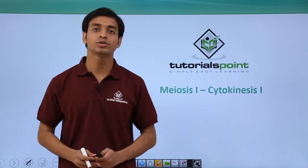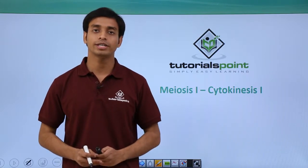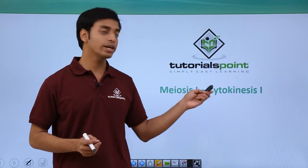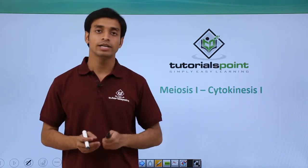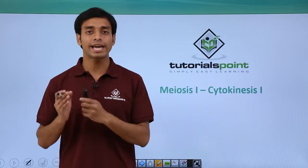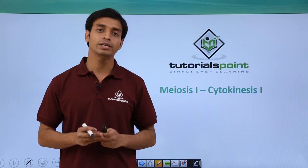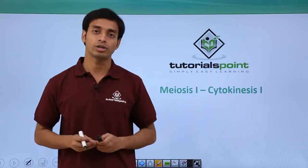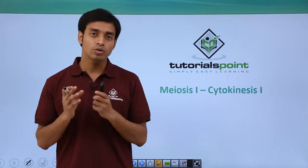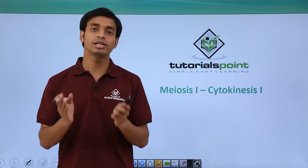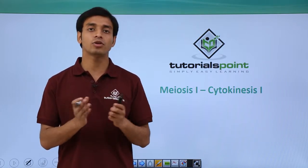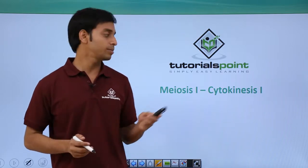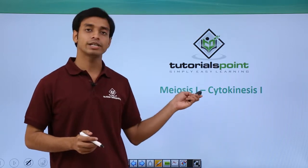Hello everyone, welcome to Tutorials Point. In this video we are going to talk about the cytokinesis 1 of meiosis 1. Before this we talked about karyokinesis 1, in which the nucleus divided into two daughter nuclei. Now after karyokinesis, or nuclear division, this is followed by the division of the cytoplasm or protoplasm, which is termed as cytokinesis 1.